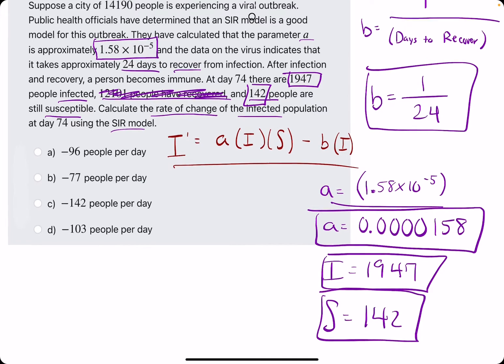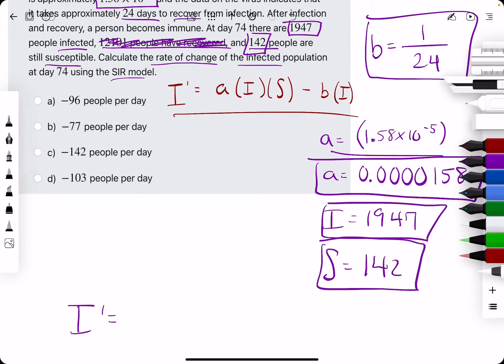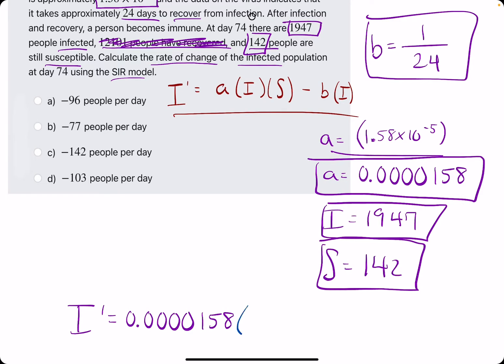So once we have B, A, I, and S, we just plug everything in to I prime. So we have A, which I'm just going to copy. Throw that baby there. Going to have I, which is 1,947, S, 142.